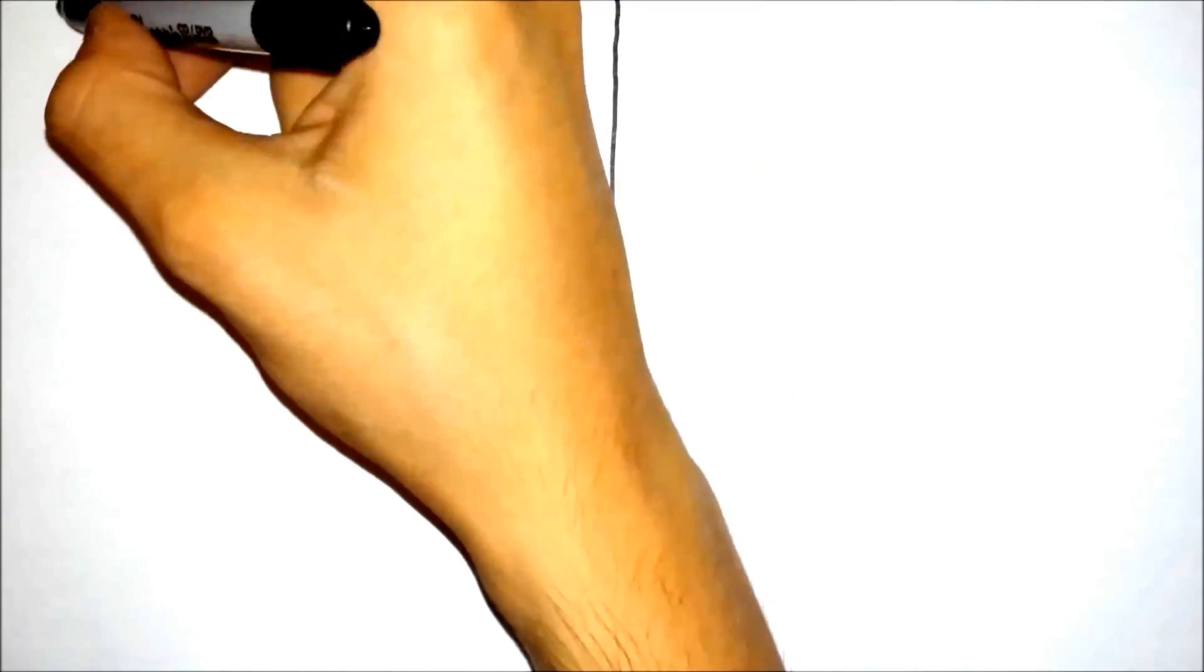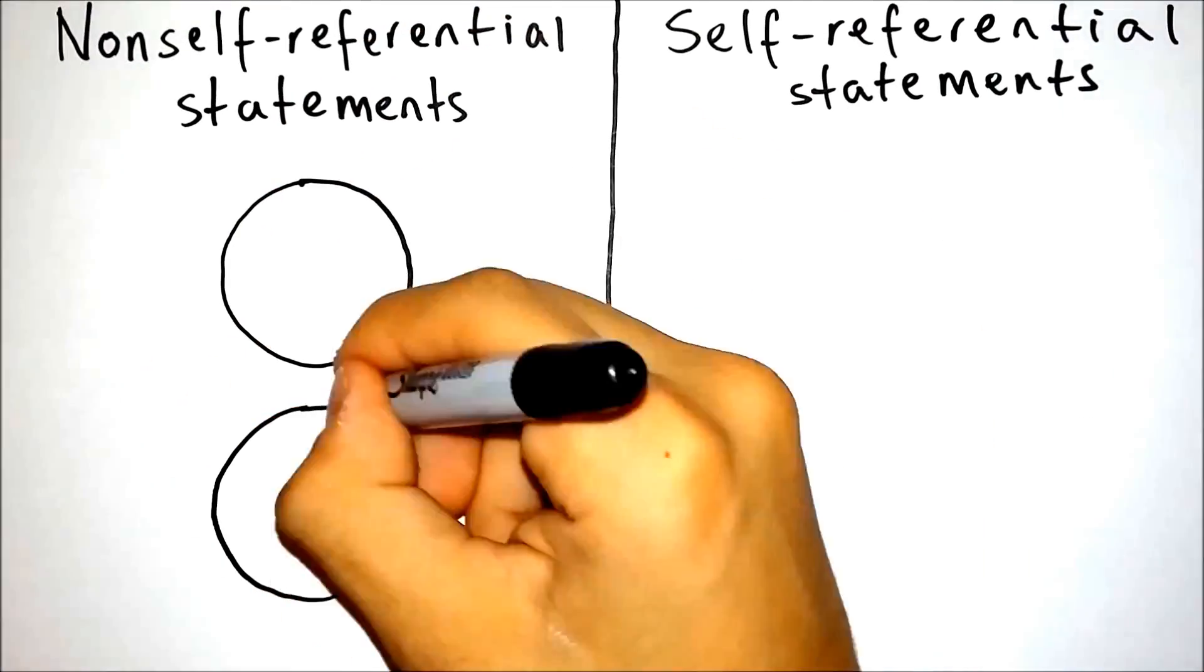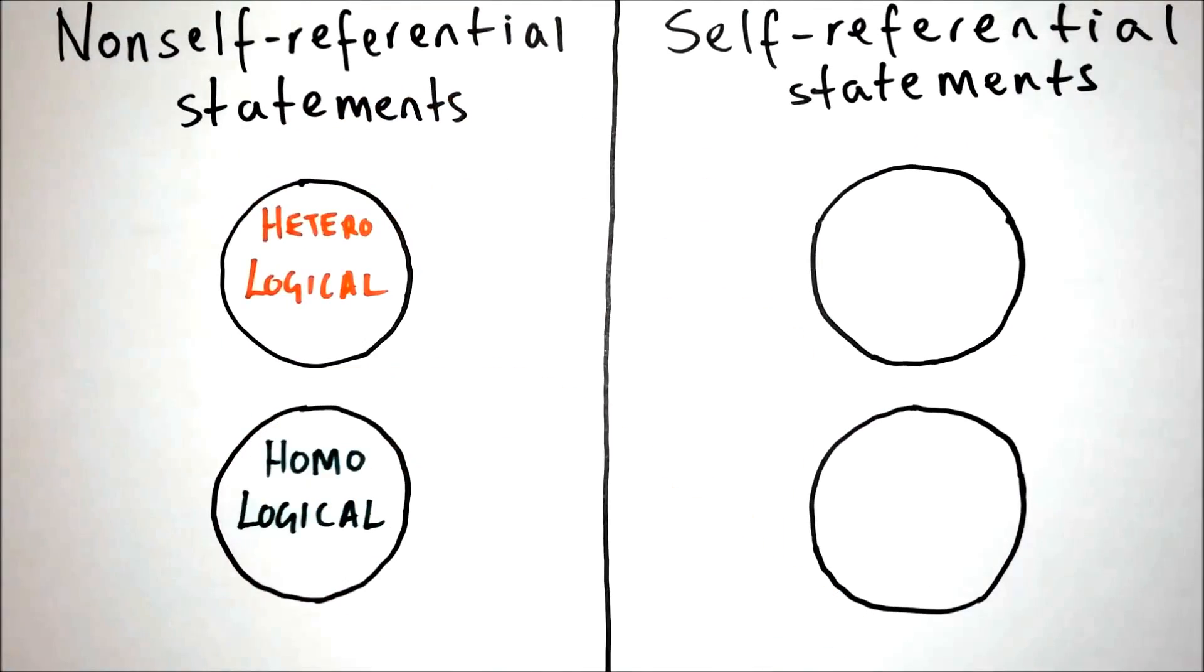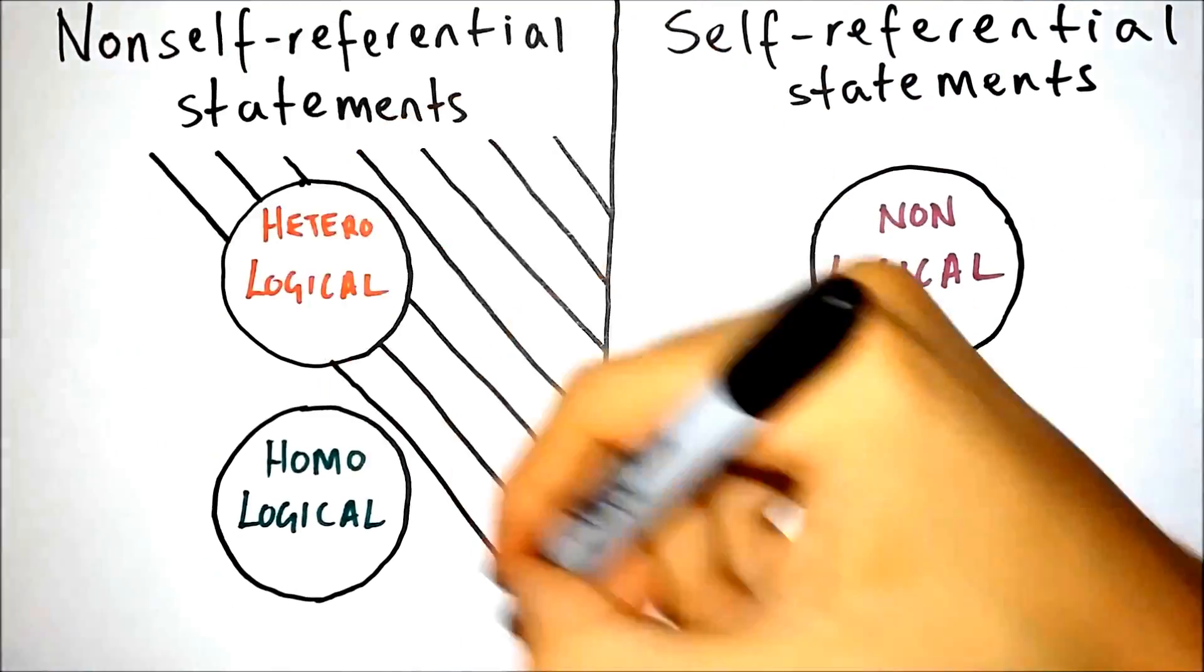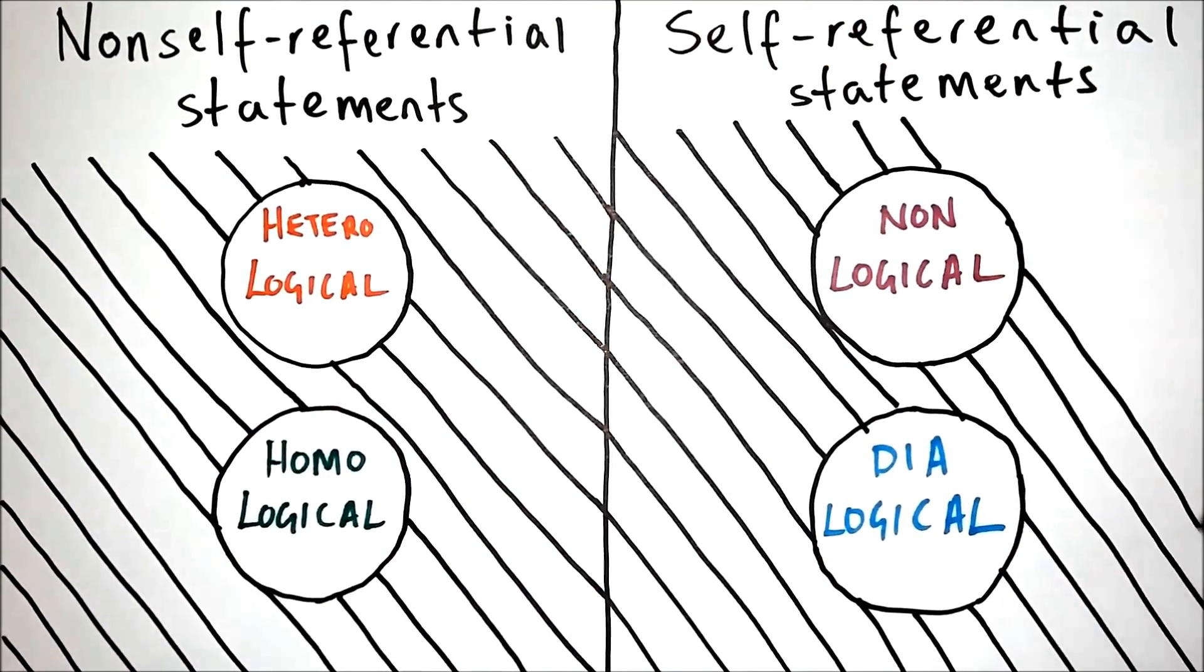But perhaps we could propose that there might be some higher system which describes things that are beyond the purview of logical thinking altogether, some paralogic that is completely separate to formal logic, and which describes logical thought itself, but not the contents of logical thought, mathematics and semantics.